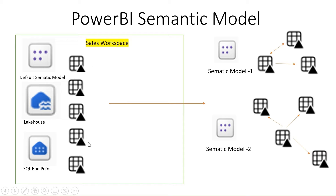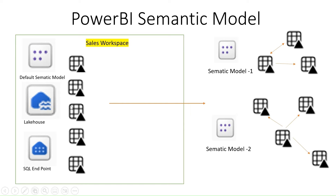Suppose if you want to provide access to these tables to different departments like finance, marketing, or B2B — you can create semantic model 1 with three tables. It's not a copy of those tables, it's just a pointer to them, and using the semantic model you can create a Power BI dashboard which will directly pull the data from your lake house. Similarly, semantic model 2 can have four tables with relationships defined, and you don't need to schedule the semantic model to refresh data — once the data is loaded or updated in your lake house, you can see the data in your semantic model.